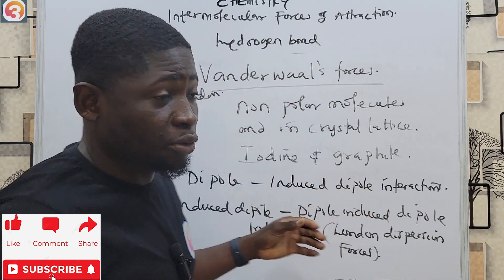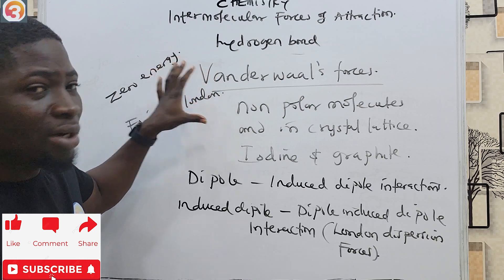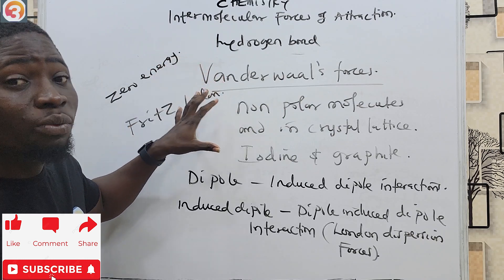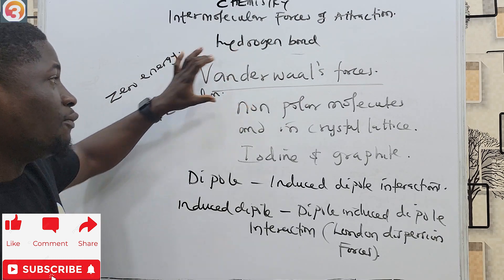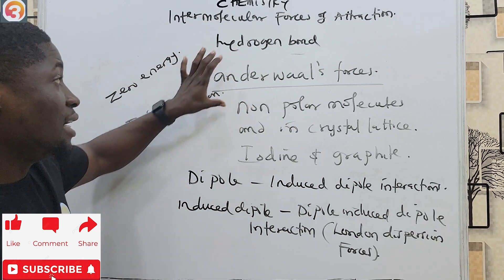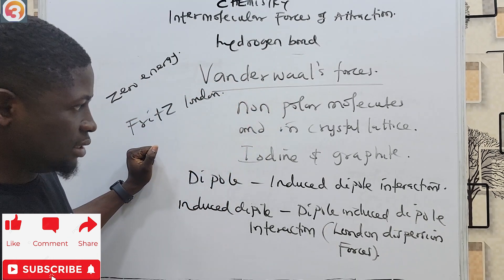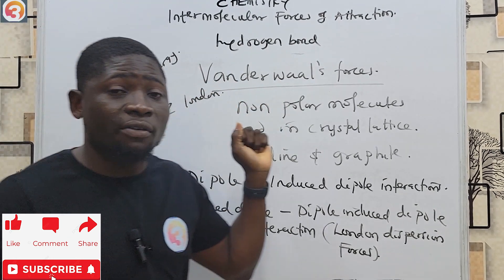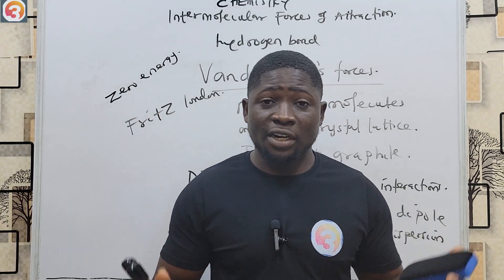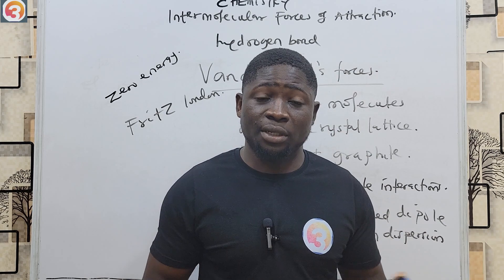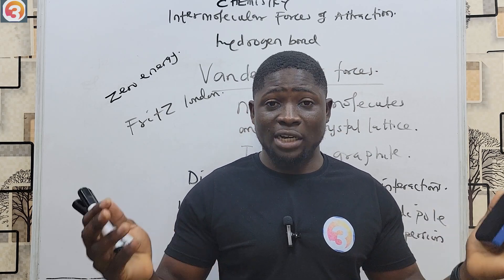To recap: we discussed intermolecular forces and intramolecular forces. We covered hydrogen bonds and van der Waals forces, noting that van der Waals forces are the weakest form of intermolecular forces of attraction. In the next class we will move on to a new topic — see you then.